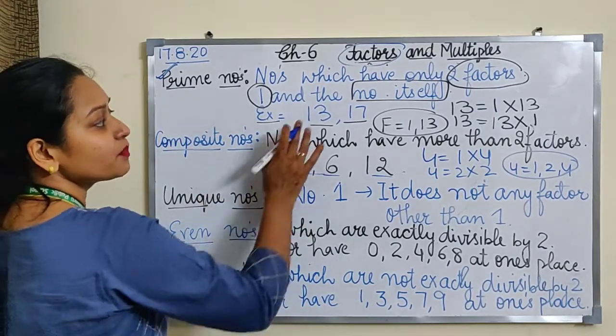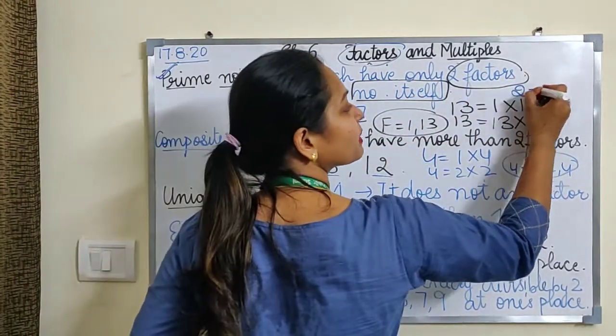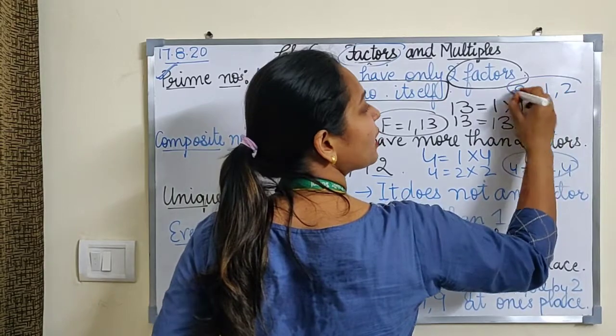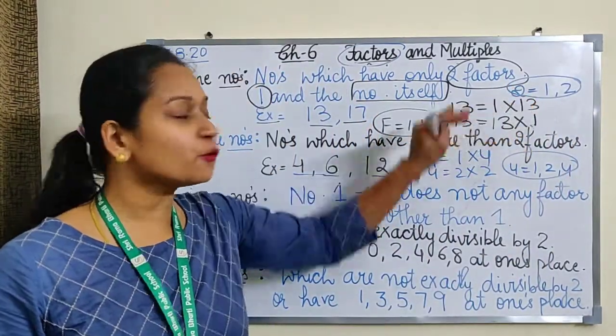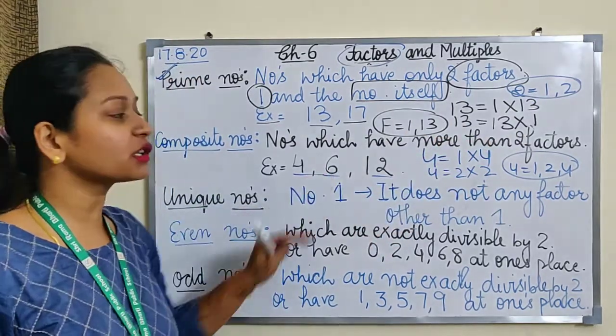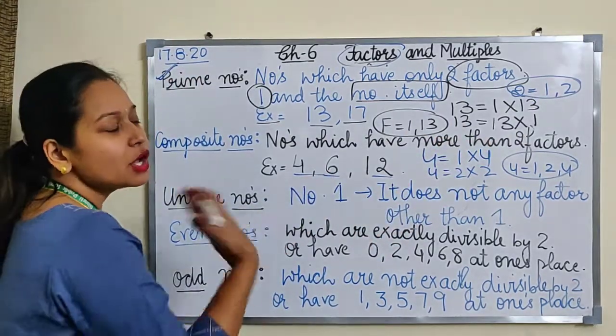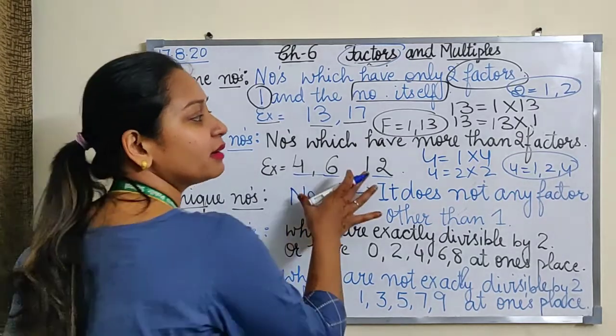One more thing - 2 is also a prime number because it has only two factors, 1 and 2. Then 3 is also a prime number. 4 is a composite number. 5 is again a prime number. This way we can find out many numbers here.